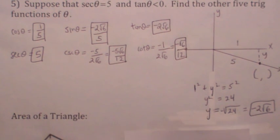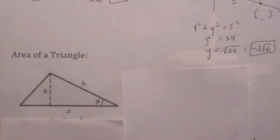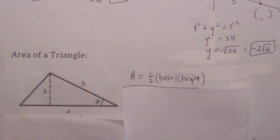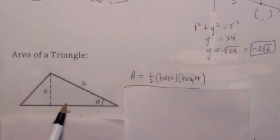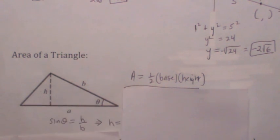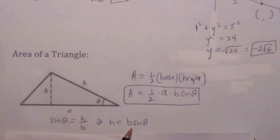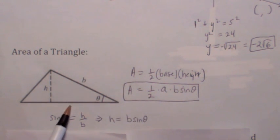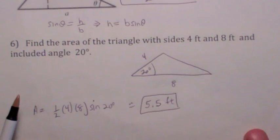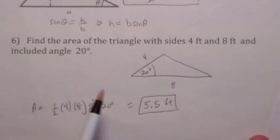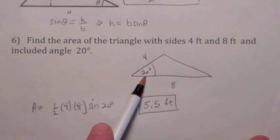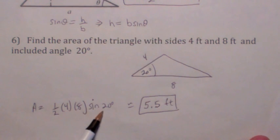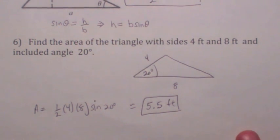One last thing: the area of a triangle. Remember, area is 1/2 base times height. Using trig, the height h satisfies sine of theta = h over b, so h = b·sin θ. This means the area equals 1/2 times a times b times sine of theta — you multiply the two sides and take the sine of the angle between them. For a triangle with sides 4 and 8 and angle 20 degrees, the area is 1/2 · 4 · 8 · sin(20°), which comes out to about 5.5 square feet. That's a nice little formula to keep straight.